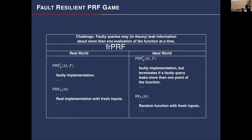In more detail: in the real world, the first phase uses a faulty implementation, and the second phase uses the real implementation with fresh inputs. In the ideal world, the faulty implementation is used but the oracle terminates if the PRF leaks more than one point — if the adversary learns more than one m' corresponding to c', it terminates. The second phase is just a random function and inputs cannot be repeated.